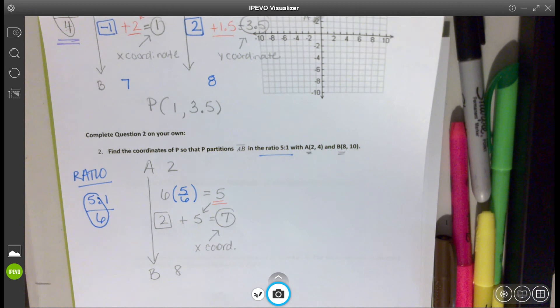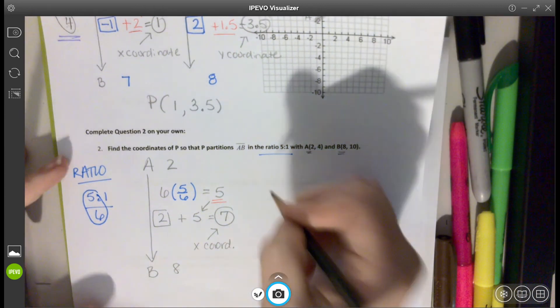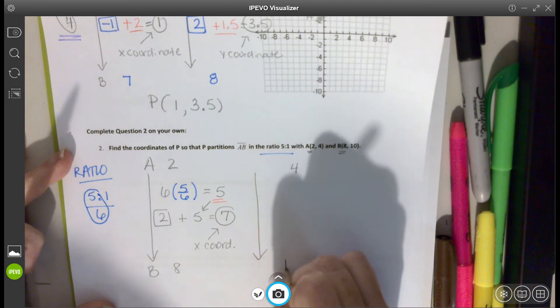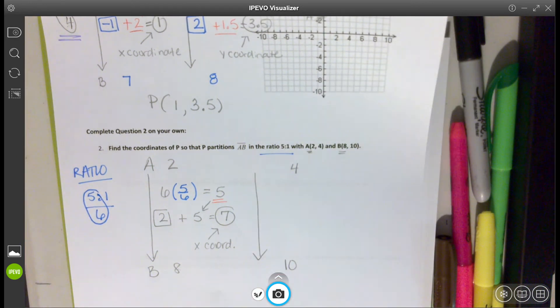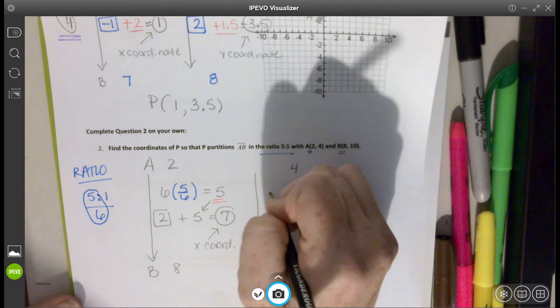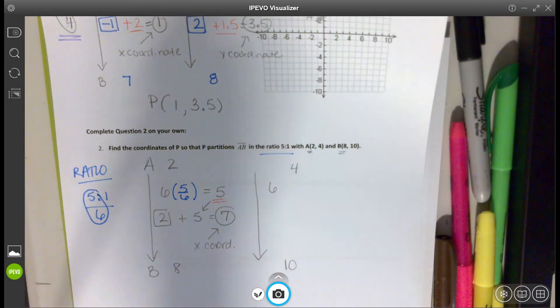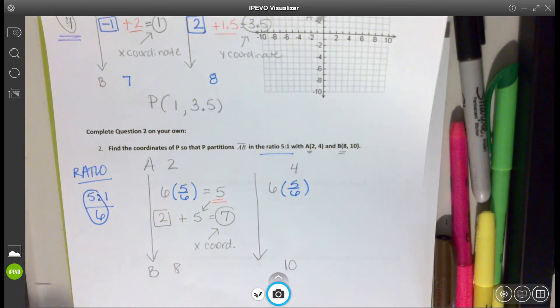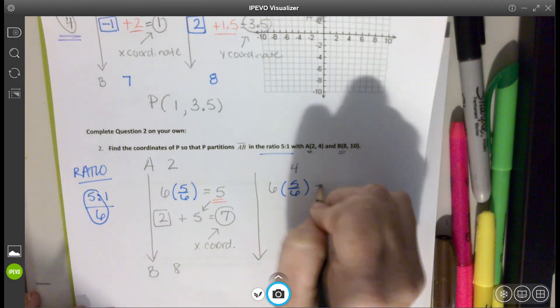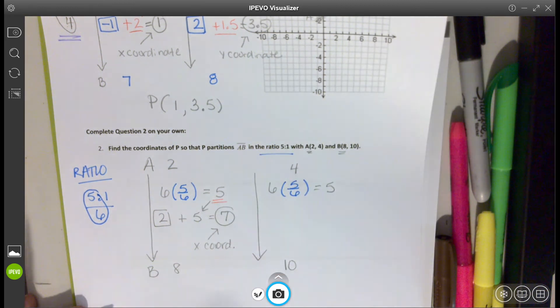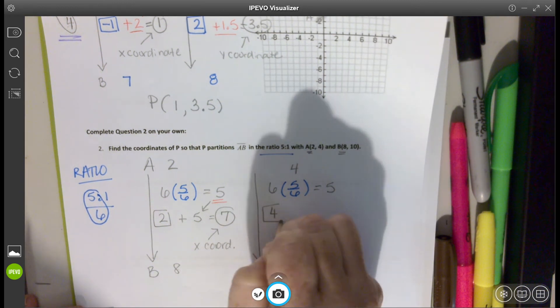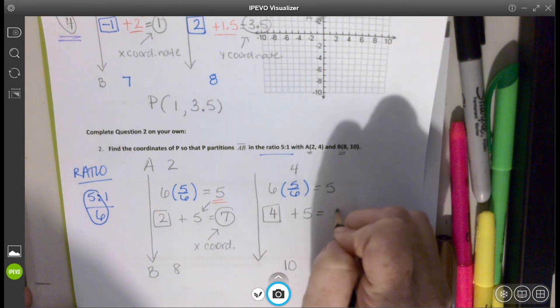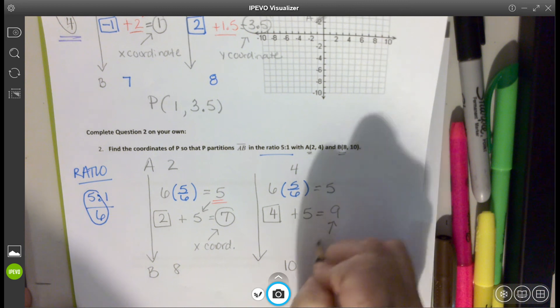We're going to repeat the process again for our y-value. So again, I like to break that apart. So here we have 4 and 10. How many spaces are we traveling from 4 to 10? That is 6 as well. We are still traveling 5 sixths of the way. And when I multiply, that gives me 5. I'm going to take my starting point for my y-coordinate, which was 4, add 5, and my new y-coordinate is 9.